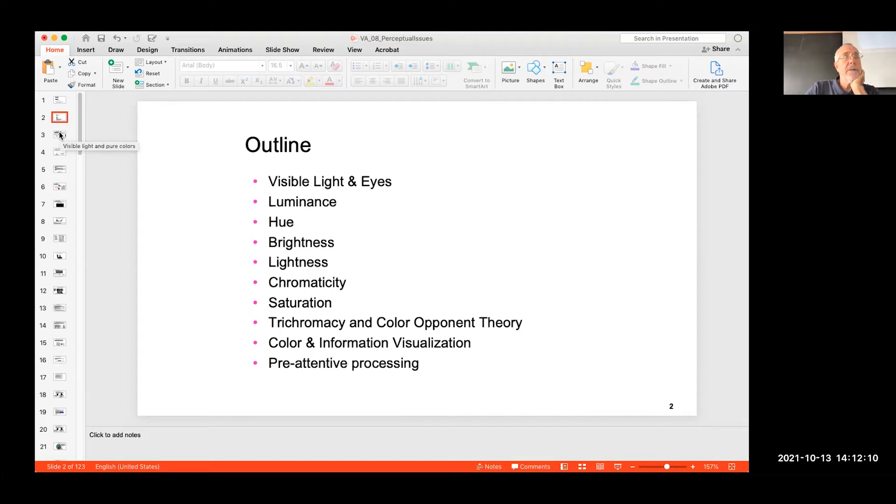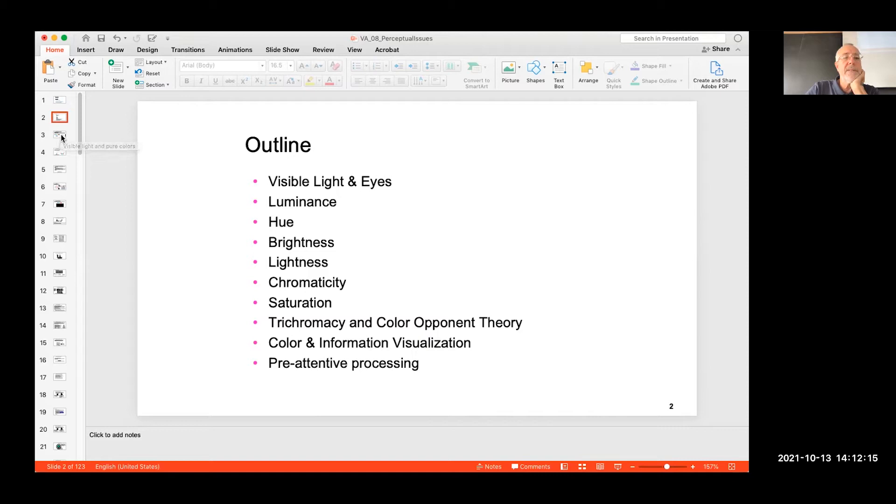I'm going to put these slides on the web. Let's start from the light. I assume you are aware that visible light is only a very little interval of the radiation we can have around us. Infrared and ultraviolet are not visible for us. We have the notion of a pure color. If you emit radiation between 400 and 440 nanometers, you get violet. In this range, blue, green, yellow, orange and red.